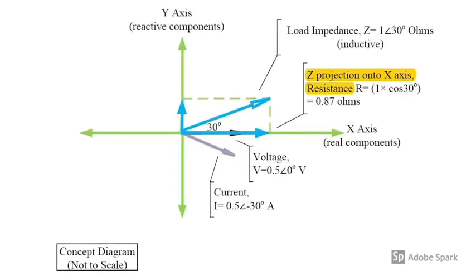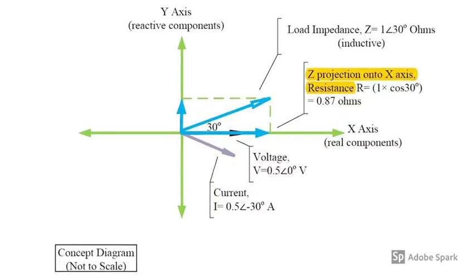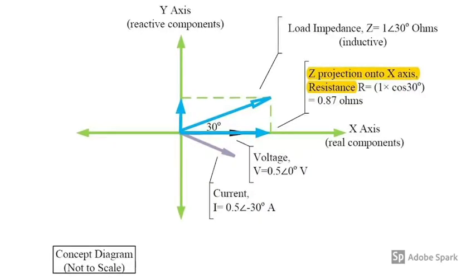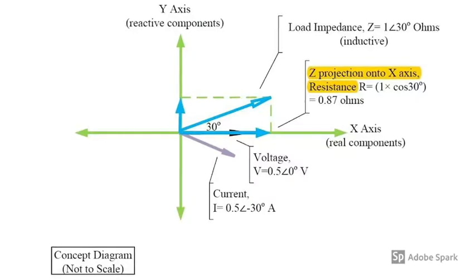When impedance is projected onto the horizontal axis, we get the resistance R, which is the same value as the DC example.